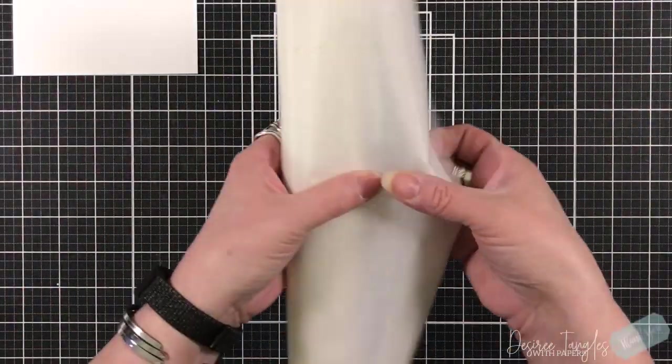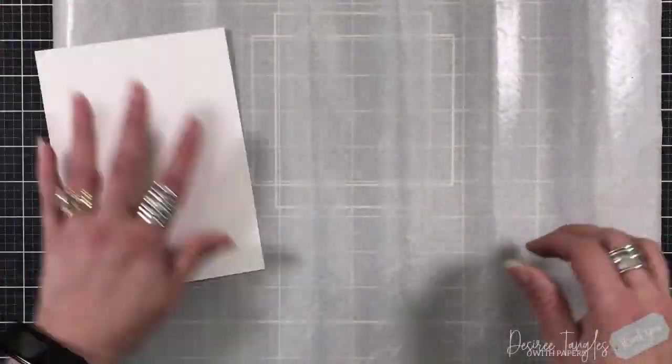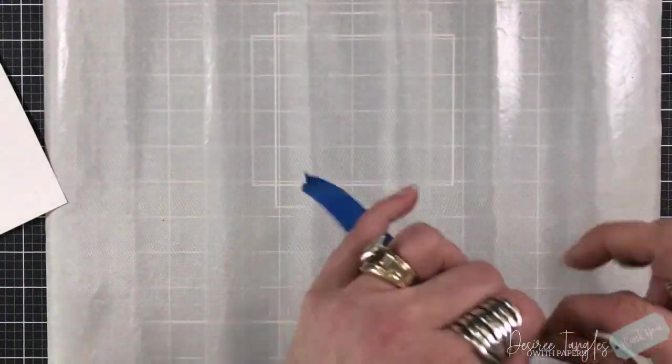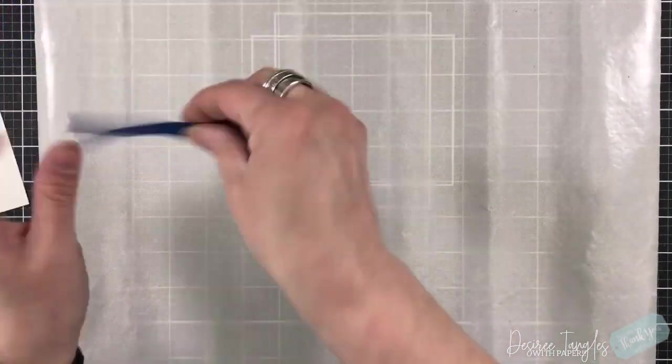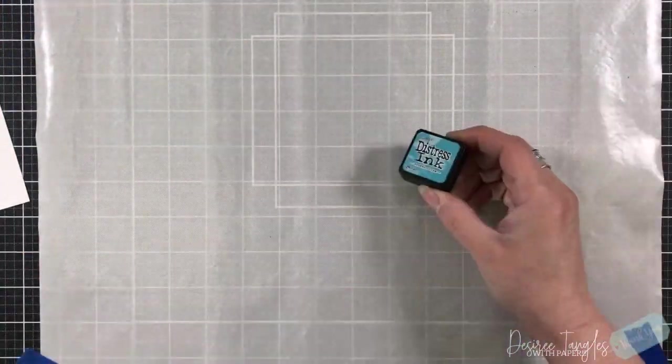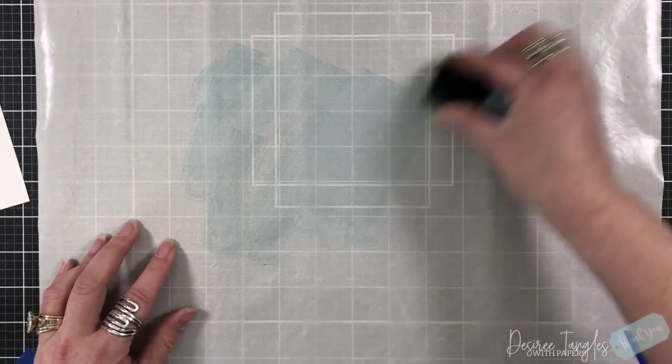It's Desiree and let's have some fun ink smooshing. That's what we're going to start out with. I grabbed my silicone craft mat and I'm just taping it down because it's really rolled up and wrinkled. I'm going to be using broken china, antique linen, and vintage photo distress inks.